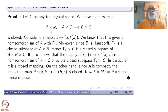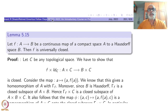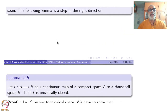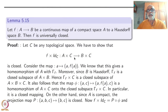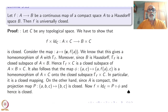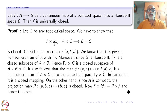To prove this, take any topological space C. Consider f cross identity from A cross C to B cross C; we must show this is a closed map. Look at the graph of f: the map A going to (a, f(a)) is a homeomorphism of A with the graph gamma-f inside A cross B. Moreover, since B is Hausdorff, gamma-f is a closed set of A cross B.